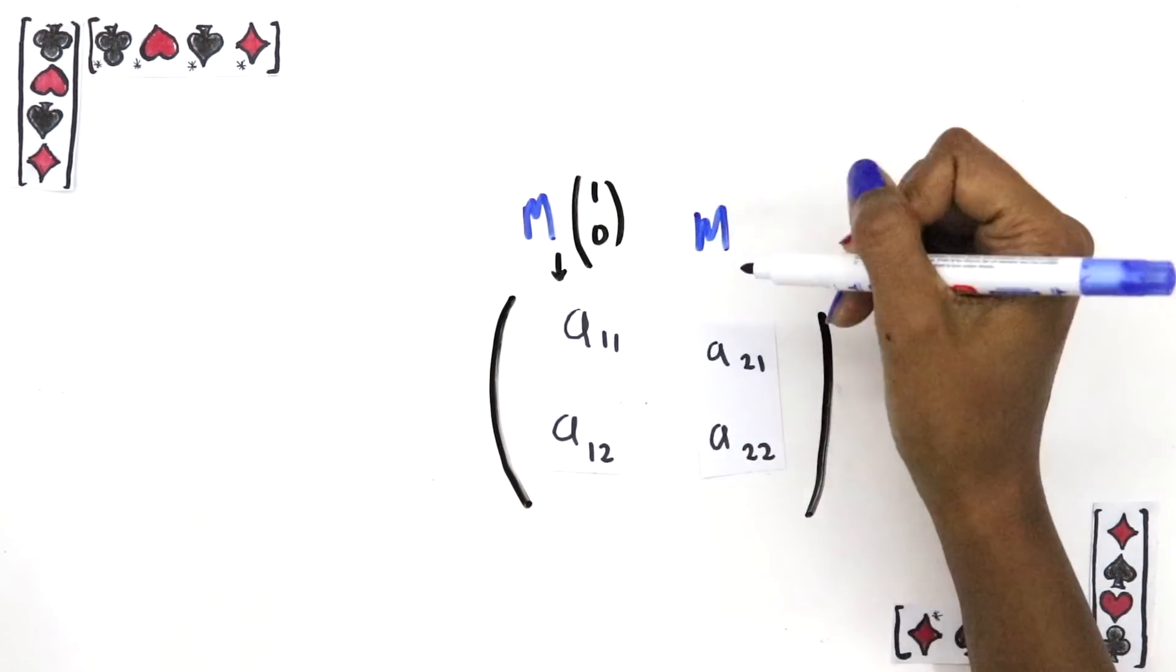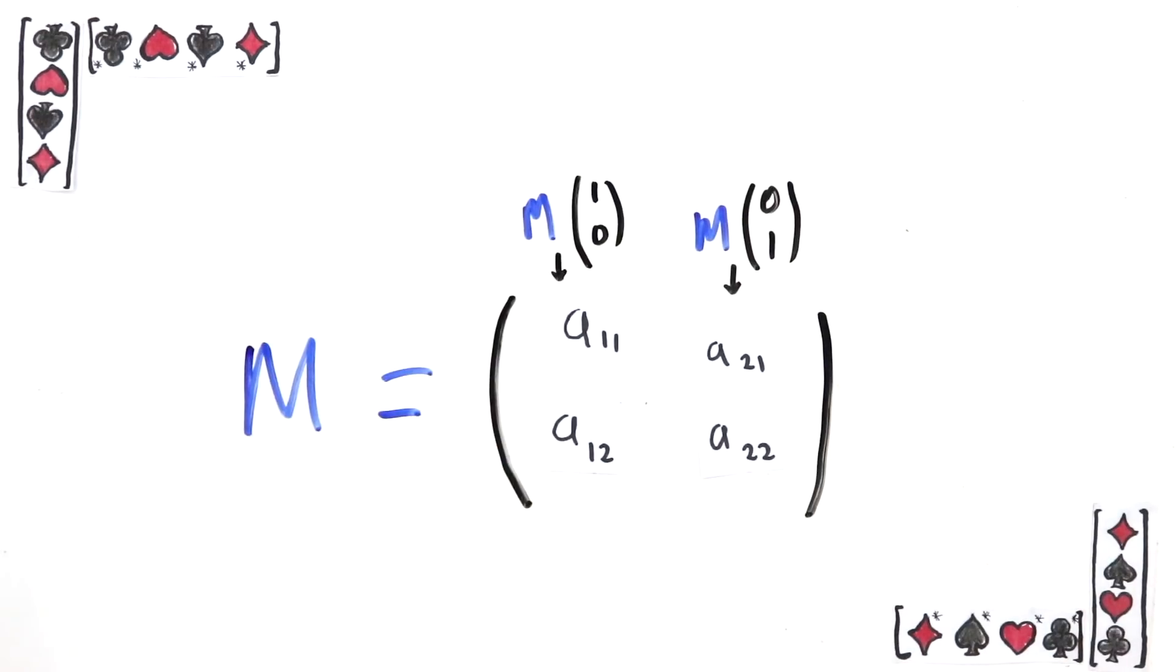It's shorthand, where, just like in the case of vectors written as columns, the basis is hidden. But the basis is super important, so this array of numbers only represents a linear transformation as long as you're clear about what the basis is.